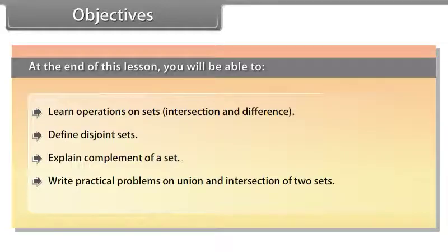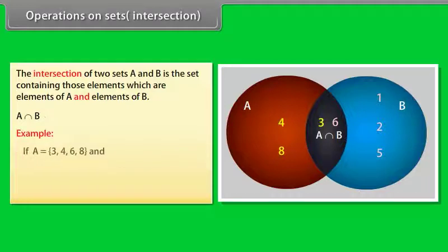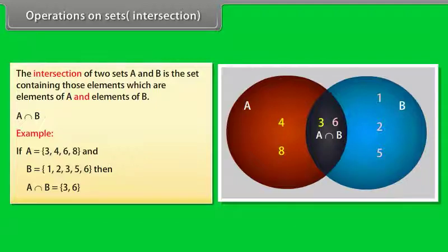Operations on sets: Intersection. The intersection of two sets A and B is the set containing those elements which are elements of A and elements of B. We use this symbol for intersection. Example: if A = {3, 4, 6, 8} and B = {1, 2, 3, 5, 6}, then A intersection B = {3, 6}. Look at this diagram now. This dark portion indicates A intersection B.